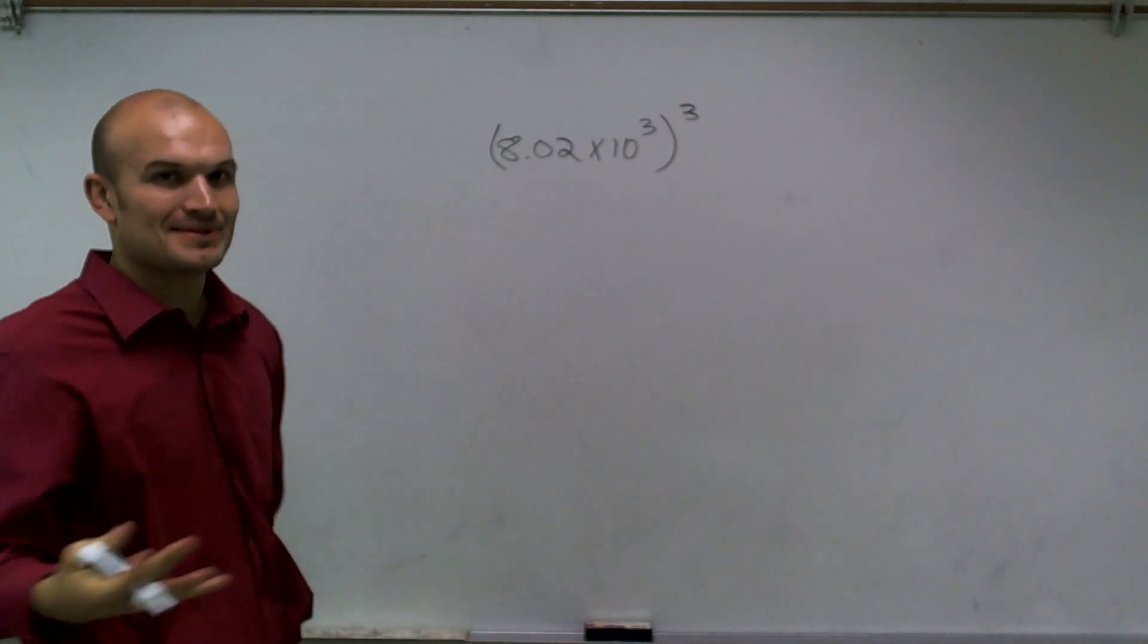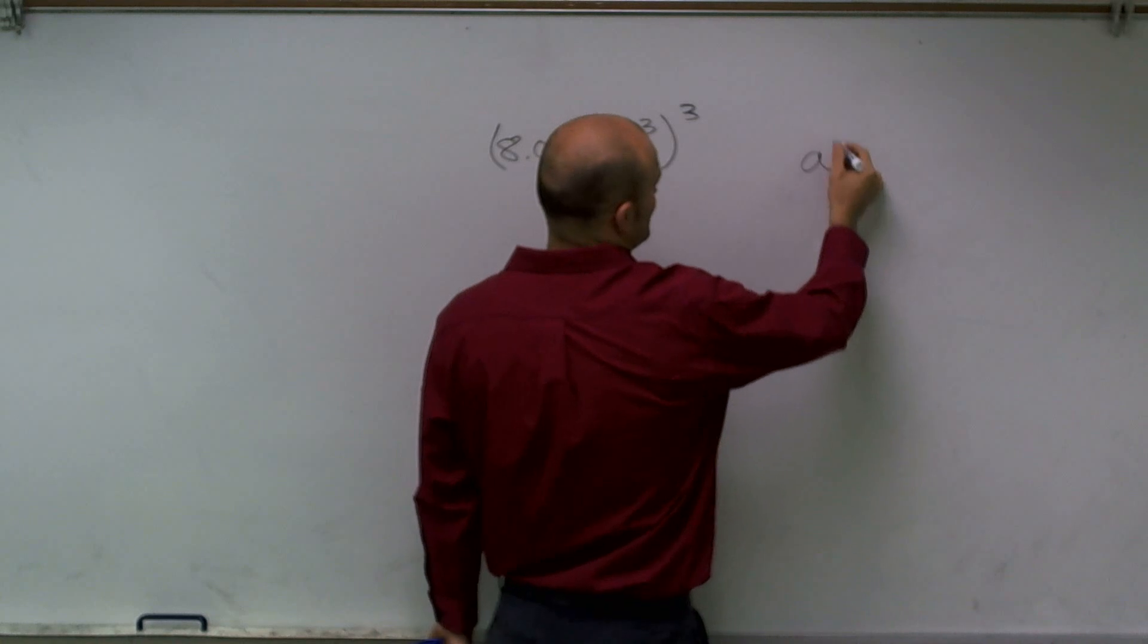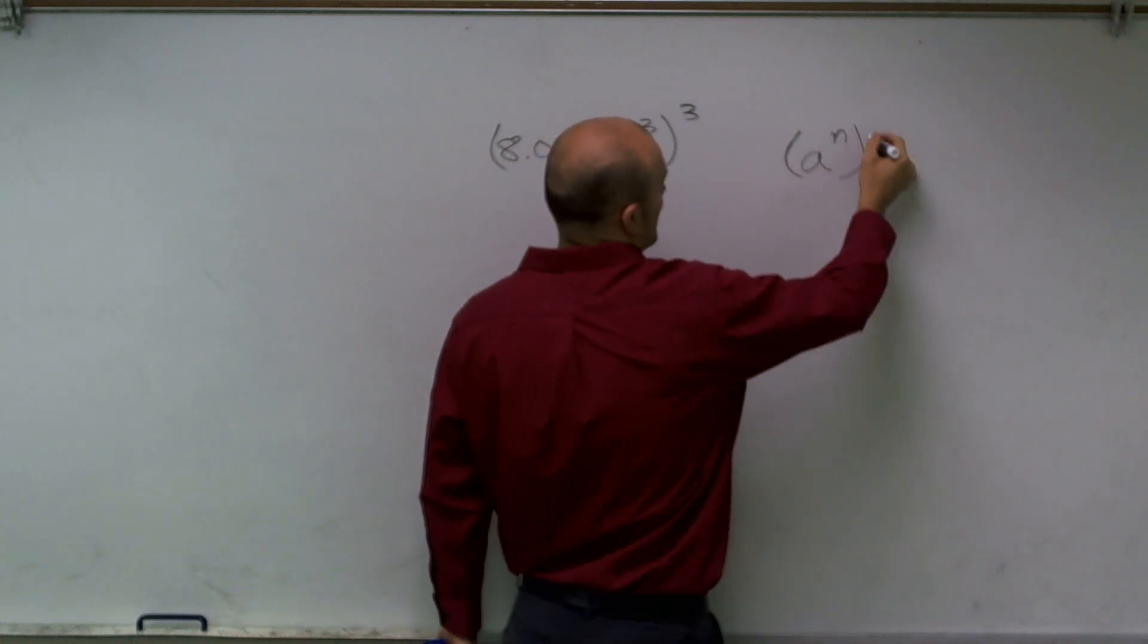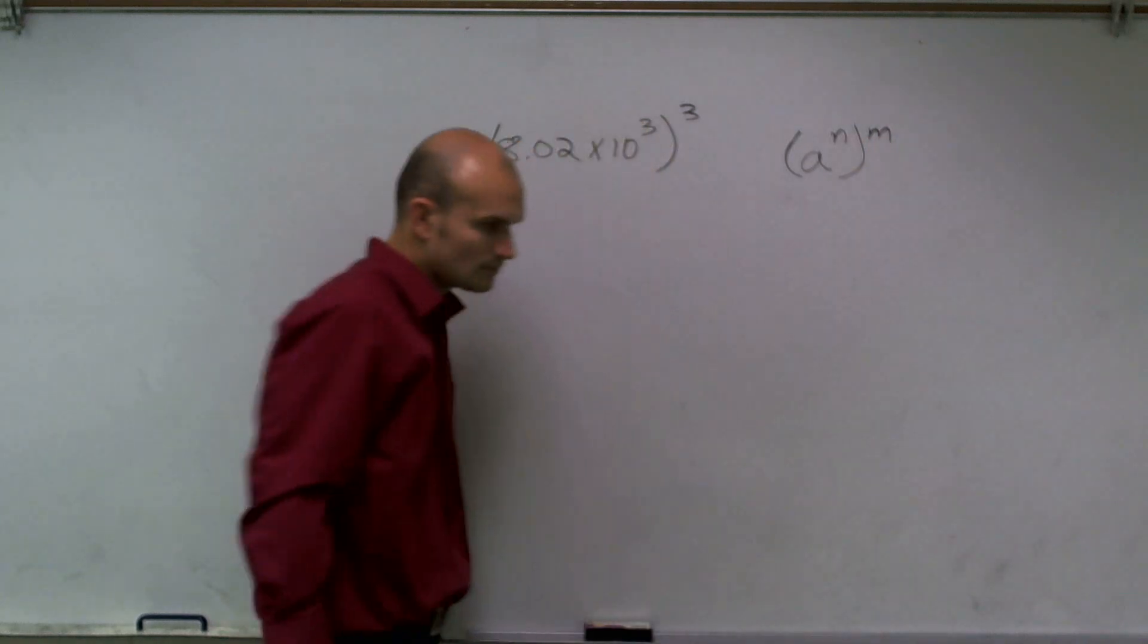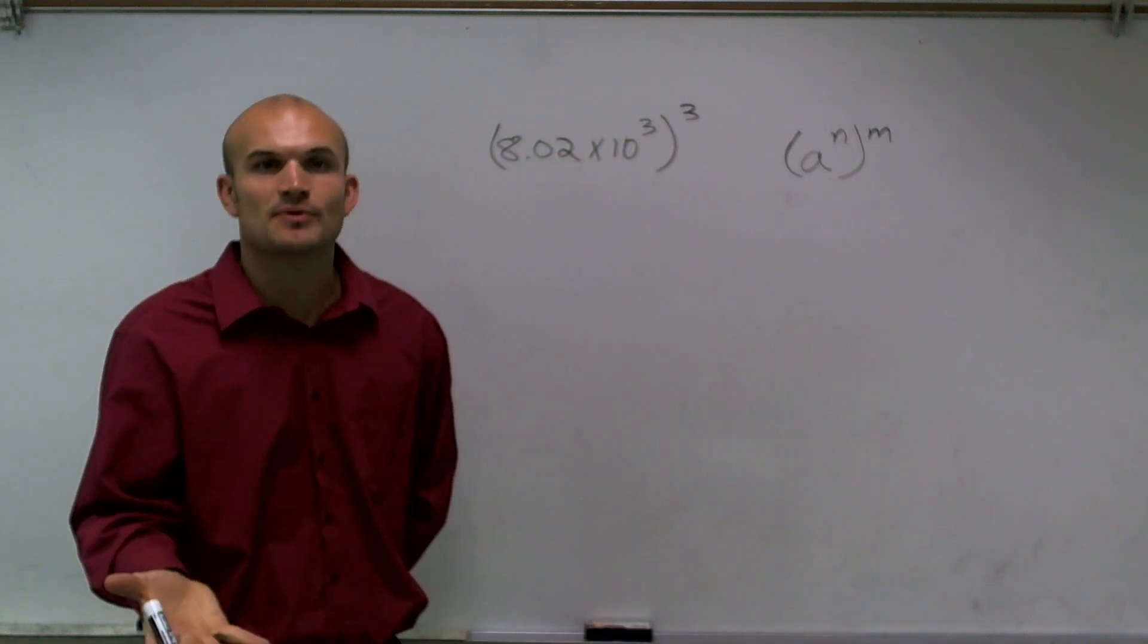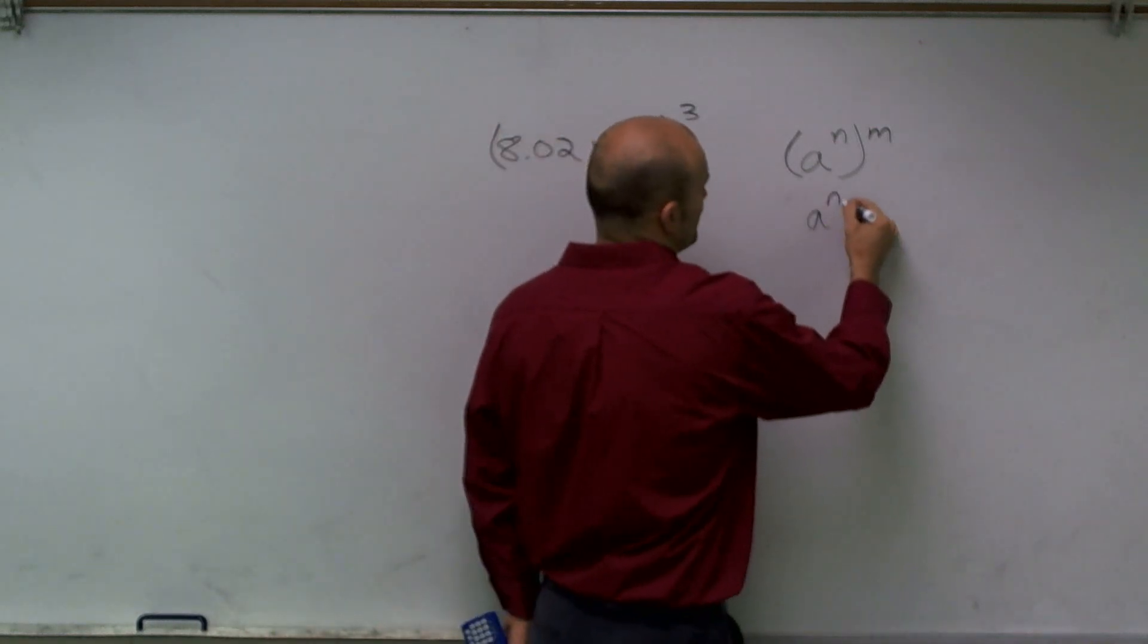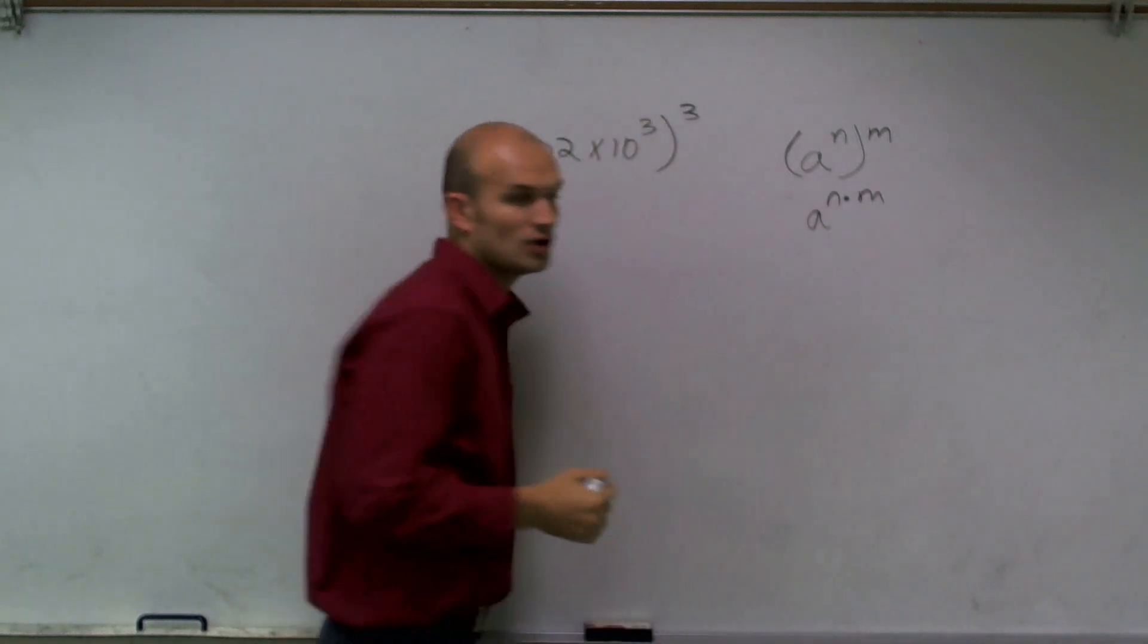So hopefully there's a couple things I want you to remember about this. First, let's take a look at the rules of exponents. If I have a to the n raised to the m, so that means if I have any number raised to an exponent and that's raised to another exponent, remember I'm going to have to multiply the two exponents.